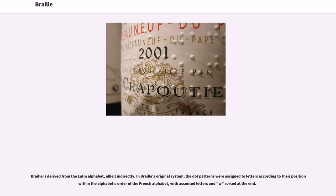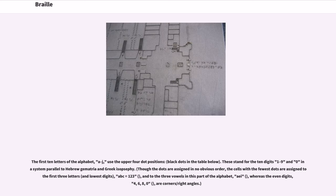Braille is derived from the Latin alphabet, albeit indirectly. In Braille's original system, the dot patterns were assigned to letters according to their position within the alphabetic order of the French alphabet, with accented letters and W sorted at the end. The first ten letters of the alphabet, A through J, use the upper four dot positions. These stand for the ten digits one to nine and zero, in a system parallel to Hebrew gematria and Greek isopsephi. Though the dots are assigned in no obvious order, the cells with the fewest dots are assigned to the first three letters and lowest digits, ABC equals 123.